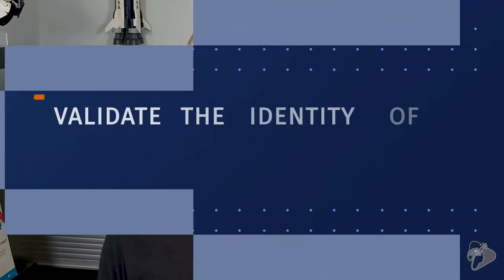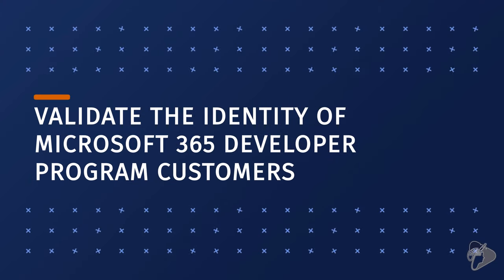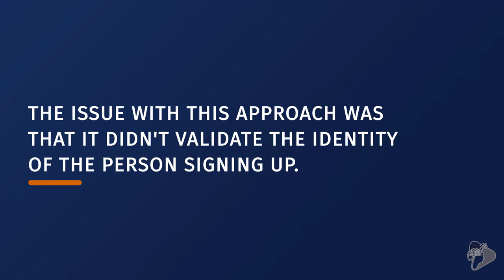But why? Before 2024, all you needed to sign up for the Microsoft 365 Developer Program was an email address — which could be created quickly using Gmail, Outlook.com, or any hosted email service. The issue with this approach is it didn't validate the identity of the person signing up. Anyone, or even a nefarious organization, could create numerous bogus emails, sign up for the program, obtain a sandbox tenant, and send out millions of emails. Because these were real tenants, even if Microsoft detected this activity, they couldn't identify the responsible party.